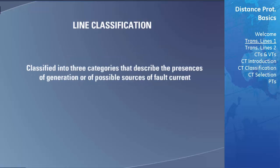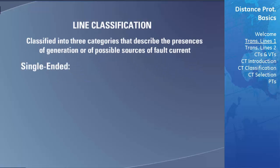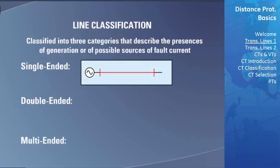Transmission lines are classified into three categories that describe the presence of generation or of possible sources of fault current that might be found at the transmission line's boundaries. These are single-ended, double-ended, and multi-ended. A single-ended line, also called a radial line, has a source at only one end. This type of line is used to deliver power from the source to a load at the other end. Whenever a fault occurs, there is only one source of current to feed the fault.